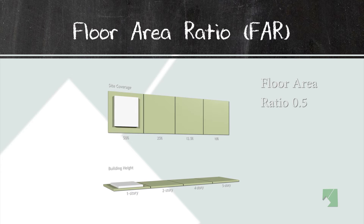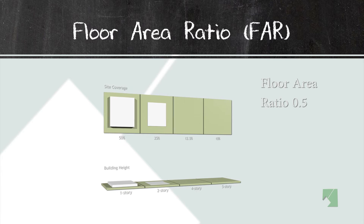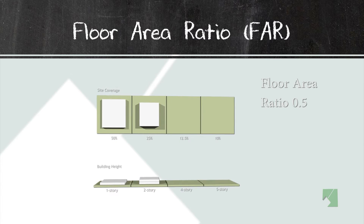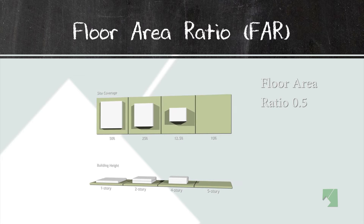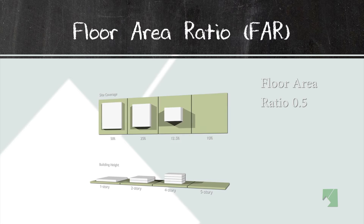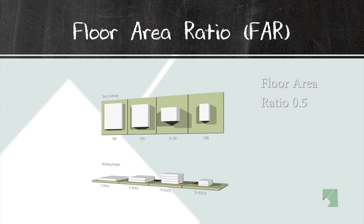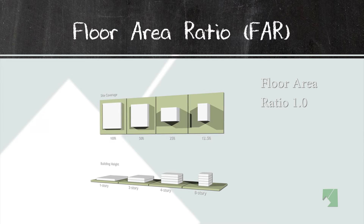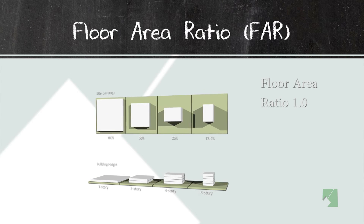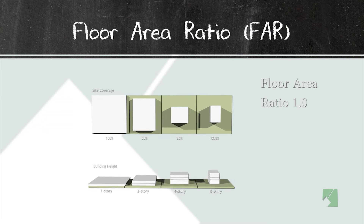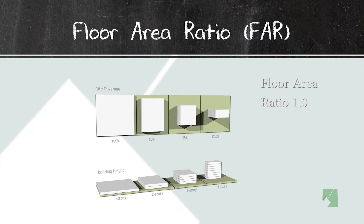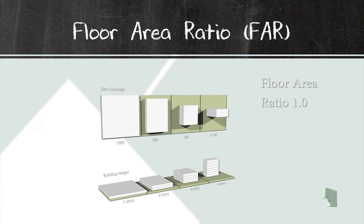FAR is a method of determining density. FAR stands for floor area ratio — the ratio between the net floor area of a building to the lot area. The more lot coverage you get, the lower the building height generally can be. If you cover less of the lot, the higher the building can be for the same FAR. These are visual representations of FAR — it's often easier to see FAR than to explain a one and a two.